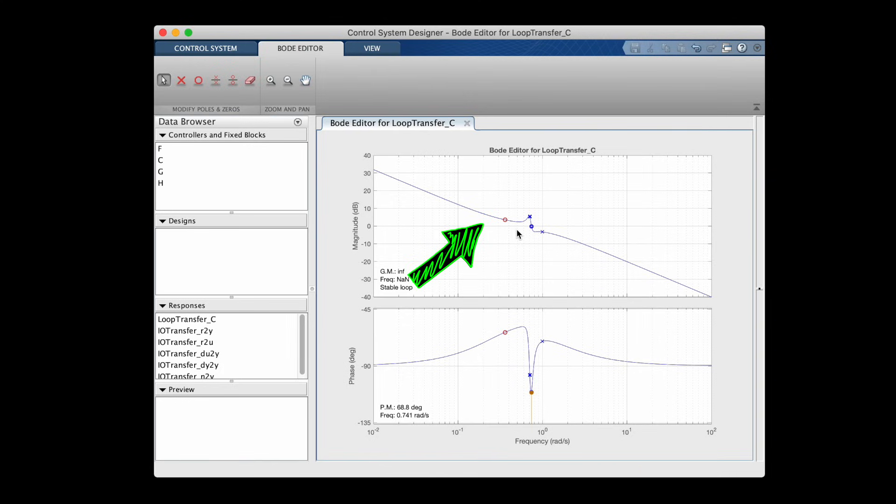But classical loop shaping becomes difficult for multi-input, multi-output systems. Or for systems that have uncertainty that can't be bounded with simple gain or phase margin. Or for systems that are highly non-linear.